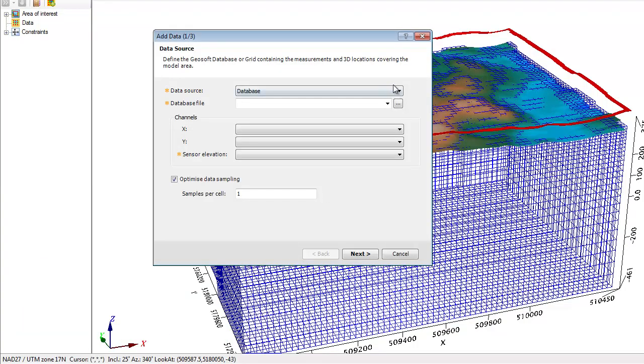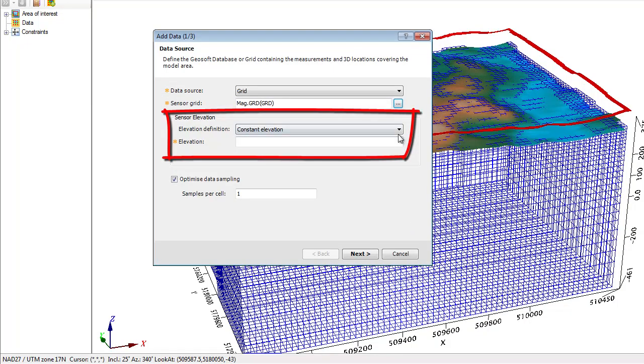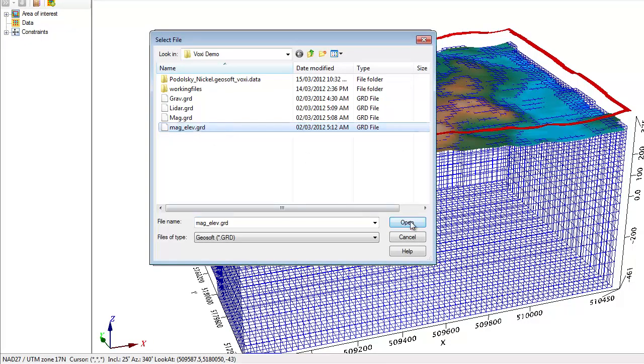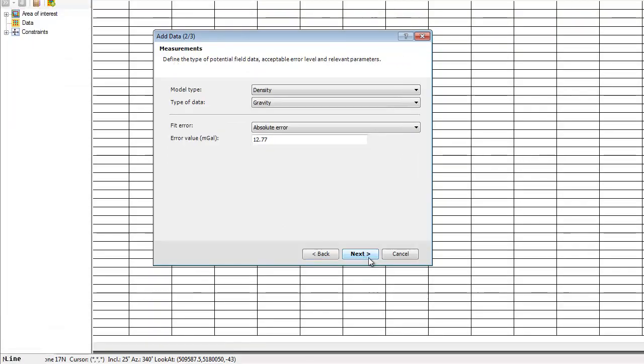I can provide the magnetic data as a database or as a grid. I'll pick my magnetic data and I also have to define at what elevation it was surveyed. Would I not have any radar elevation information? I can define an average constant elevation. But in this case, we do have the elevation.